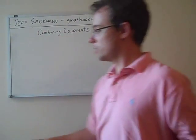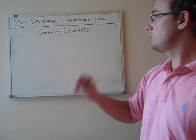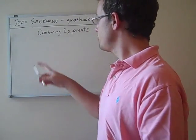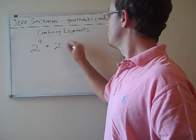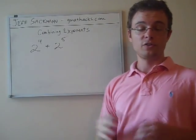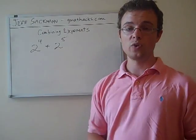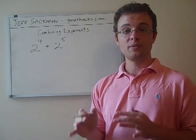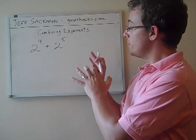Now this is where it starts getting a little more confusing. One thing you'll see on more difficult questions is instead of multiplying 2 to the 4th and 2 to the 5th, let's say we're adding them. There's no concrete rule to combine them. We can't add the exponents, we can't multiply the exponents, but sometimes you'll want to simplify this expression.